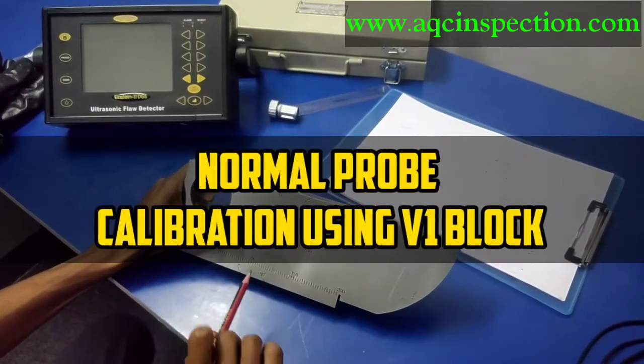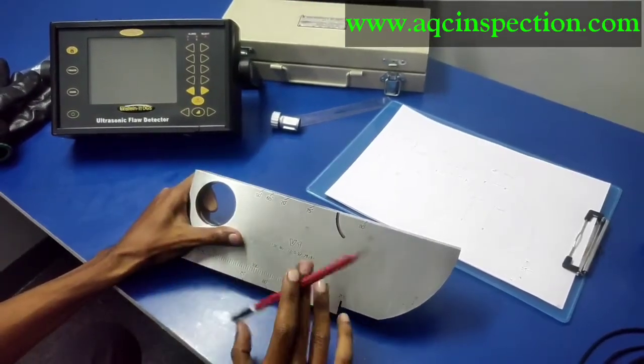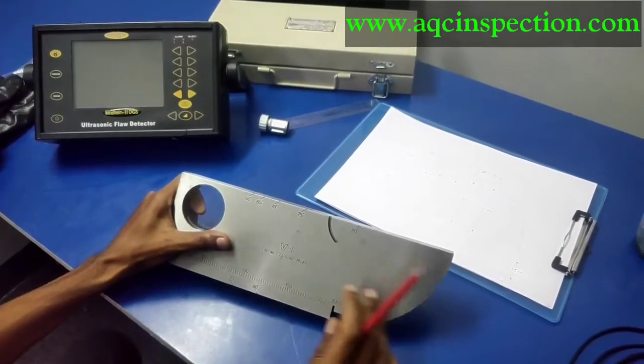Hello all, today we are going to see about the dimension of the V1 block which is manufactured by IIW, the Internal Institute for Welding.